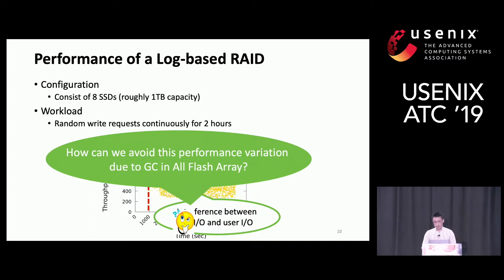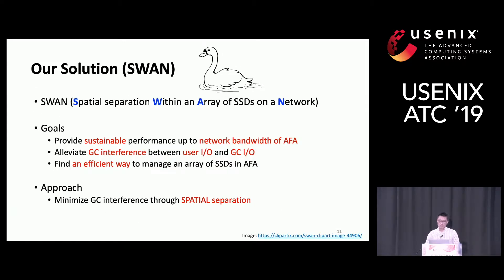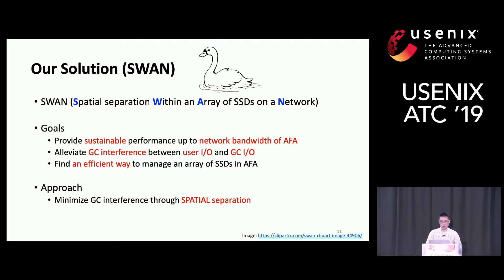So how can we avoid performance variation due to garbage collection in an All-Flash Array? Our solution is SWAN — Spatial separation Within a Array of SSDs on a Network. We have three goals: first, provide sustainable throughput up to network bandwidth of the All-Flash Array; second, eliminate garbage collection interference between user IO and garbage collection IO; and third, find an efficient way to manage the array of SSDs.